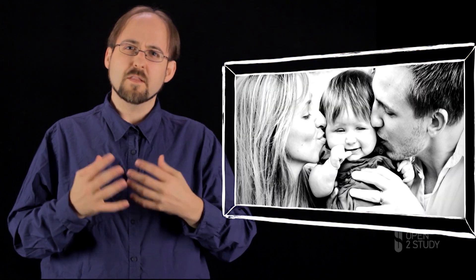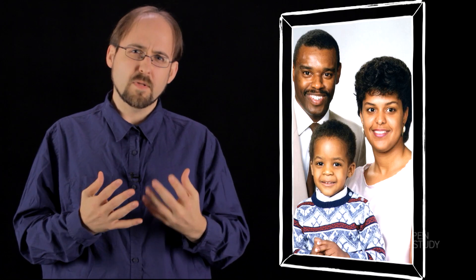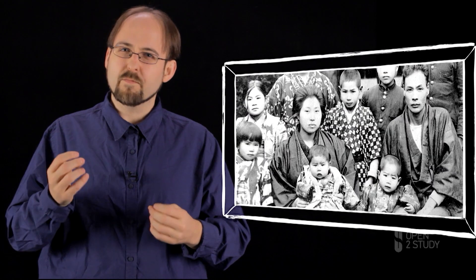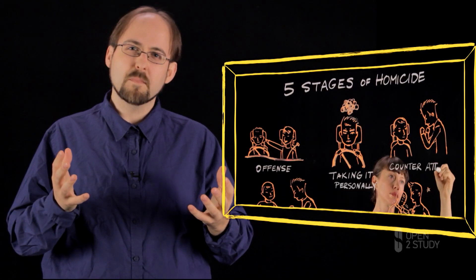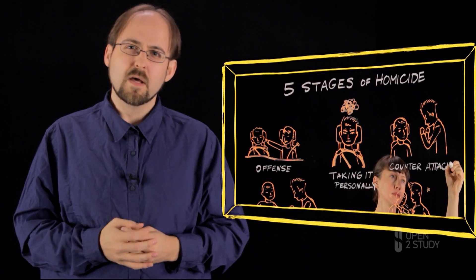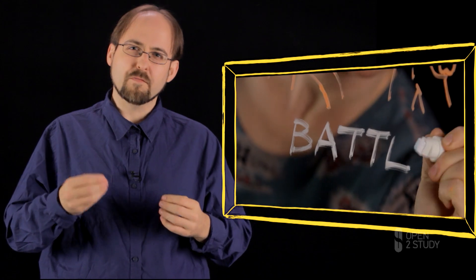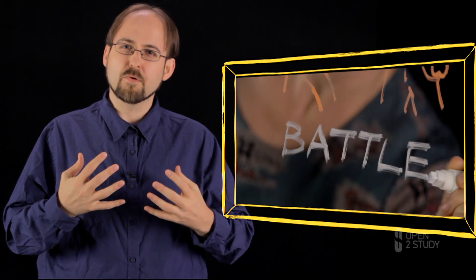We'll talk about the origin of the family and family relationships and how they relate to crime. We'll talk about the average typical homicide — two young men killing each other over status. We'll talk about warfare and riots and feuding and group aggression in general.